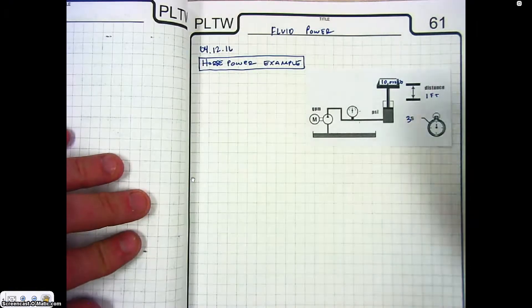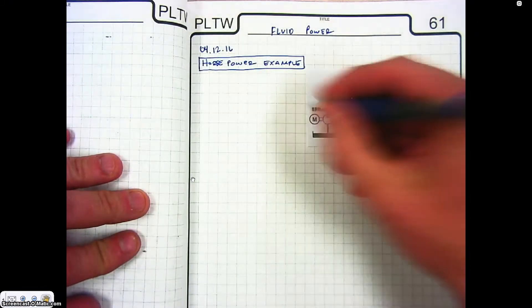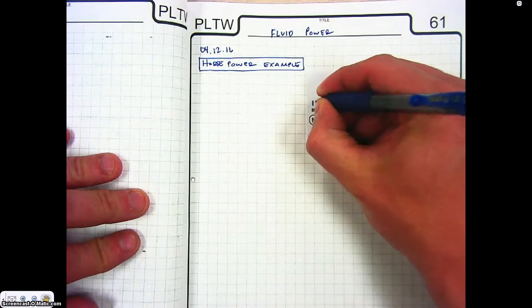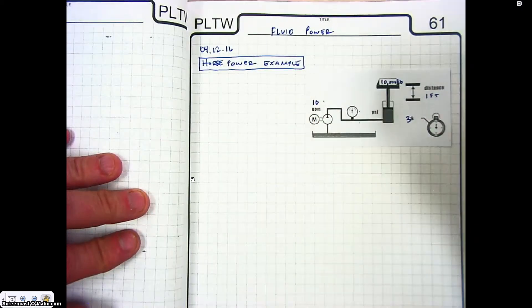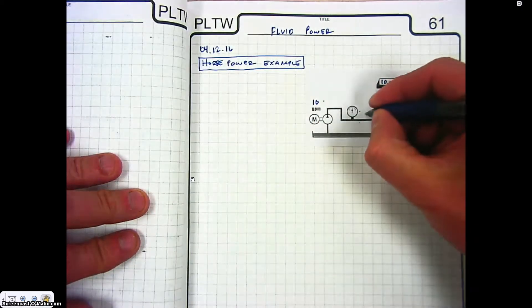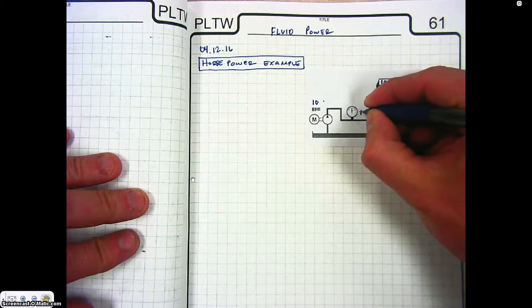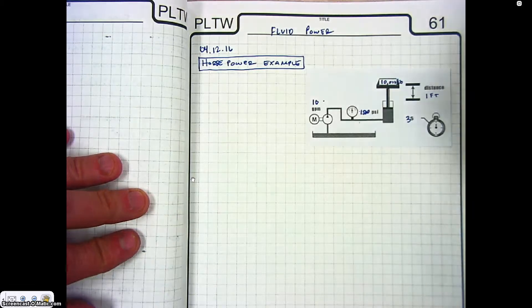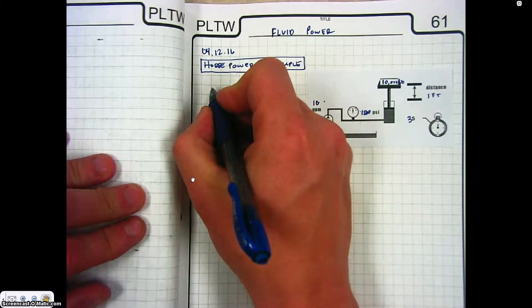So we're going to put in some of our values here. We have the 10,000 pounds, we have a flow of 10 gallons per minute, we have a PSI reading on our gauge of 1500 PSI, and so our formula for horsepower...